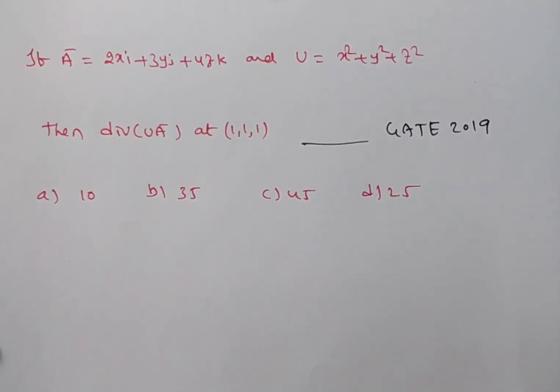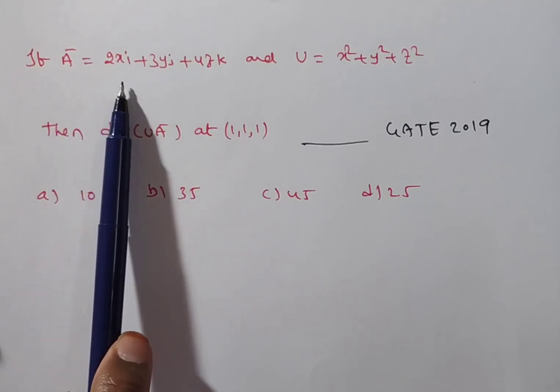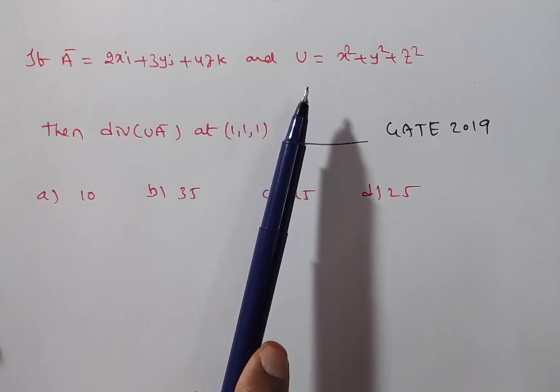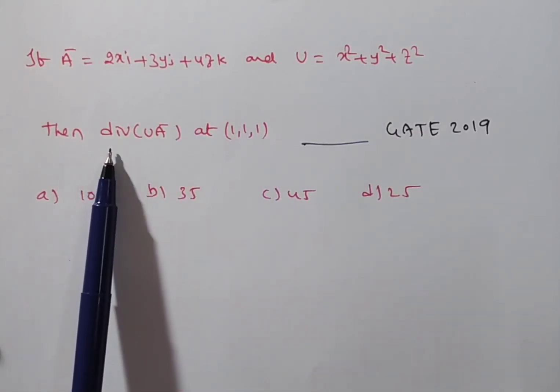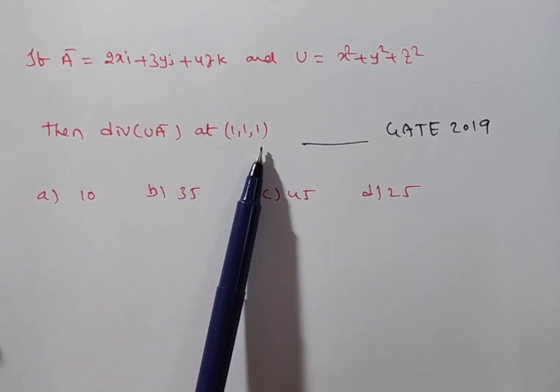Friends, in this video, we are solving a problem on vector differential calculus. Given problem is, if a bar is equal to 2xi plus 3yj plus 4zk and u is equal to x square plus y square plus z square, then find divergence of u a bar at the point 1 comma 1 comma 1.